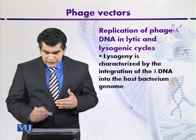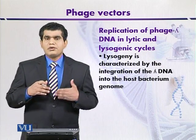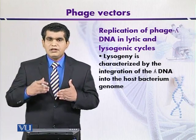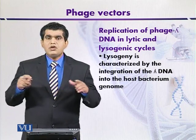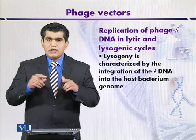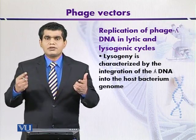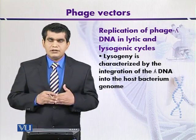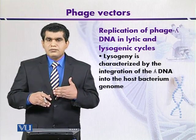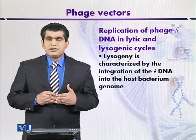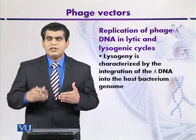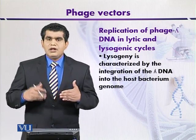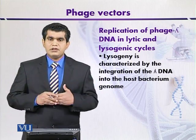Another possibility is that the phage does not cause lysis of the host cell. Instead, after adsorption, it injects its DNA or genome and the linear duplex molecule is converted into circular form by joining its cohesive or cos sites through complementary base pairing at the 5 prime end. When converted into circular form, the next step is that it integrates itself into the host genome, where it replicates along the host chromosome and is transferred into daughter cells.